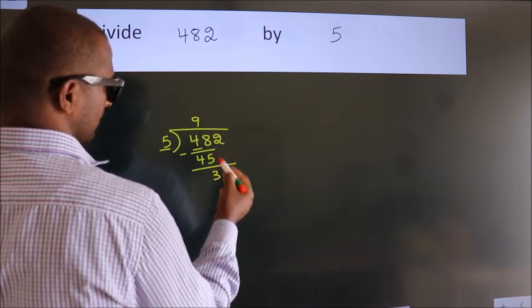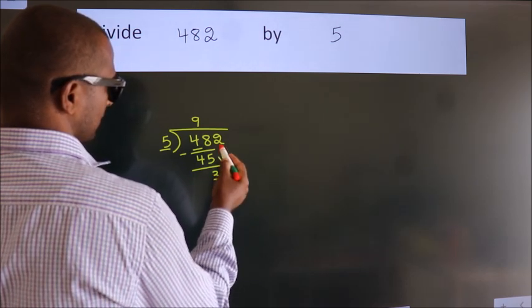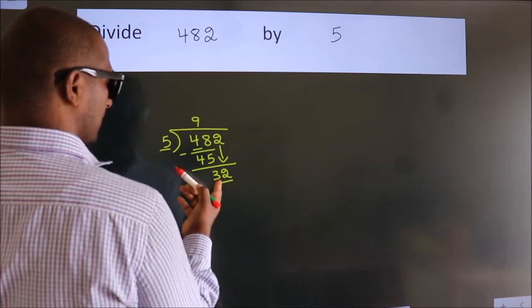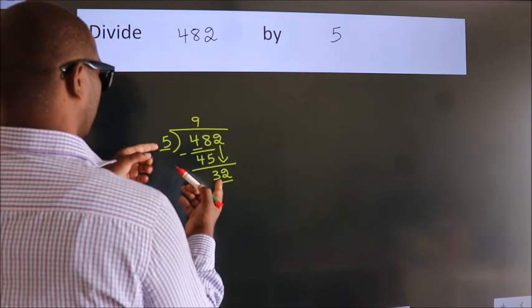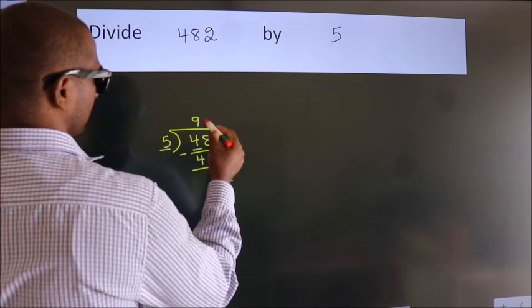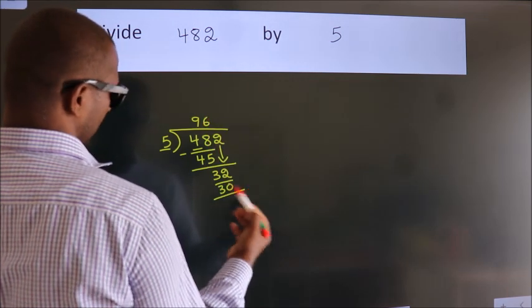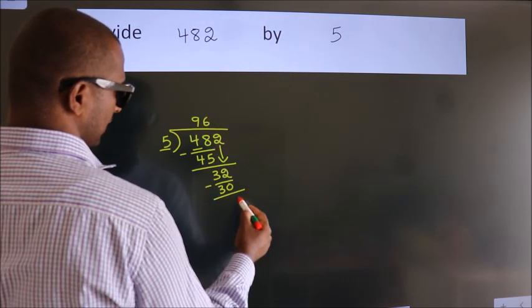After this, bring down the next number. So 2 down, making 32. A number close to 32 in the 5 table is 5 times 6 equals 30. Now we subtract. We get 2.